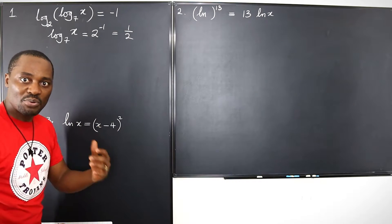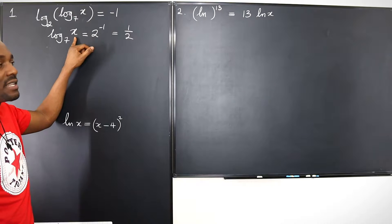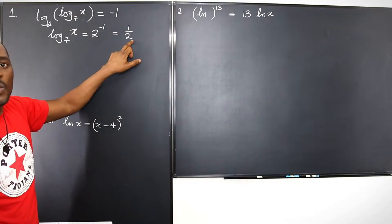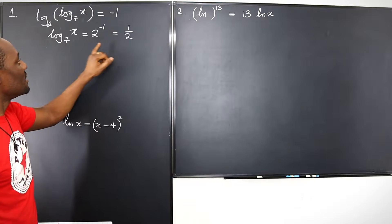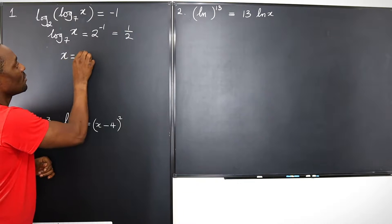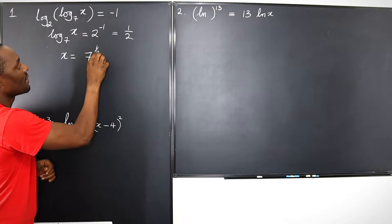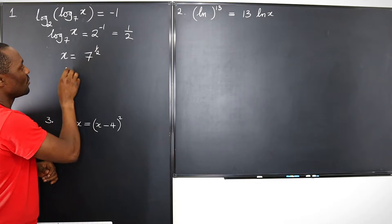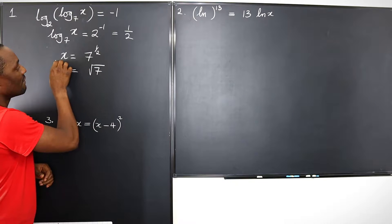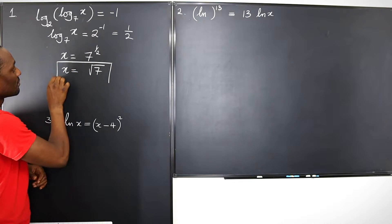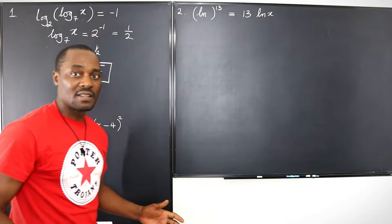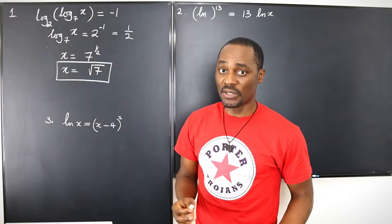Now we repeat that process. The logarithm of x to base 7 is 1 half, which means x will be equal to 7 to the 1 half — which means x equals the square root of 7. And that's it. So the first one is that simple and straightforward.